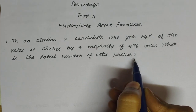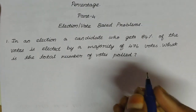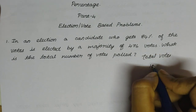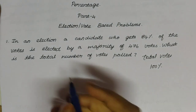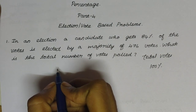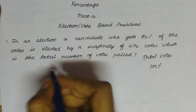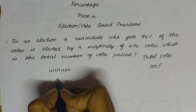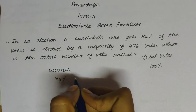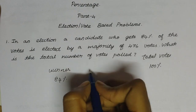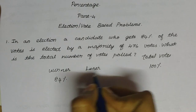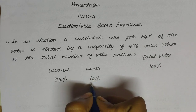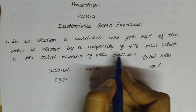It is a percentage concept. First step, basic step: consider the base value. Since it is a vote-based problem, we will take total votes as 100%. The winner percentage is 84%, so the loser gets 16% of total votes.